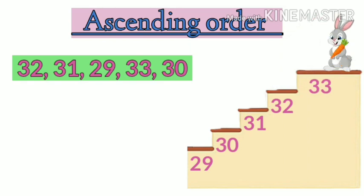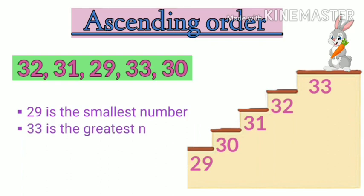So as you can see, 29 is the smallest number and 33 is the greatest number.